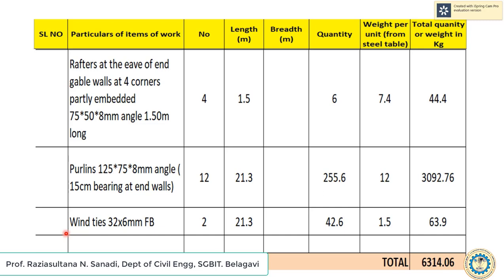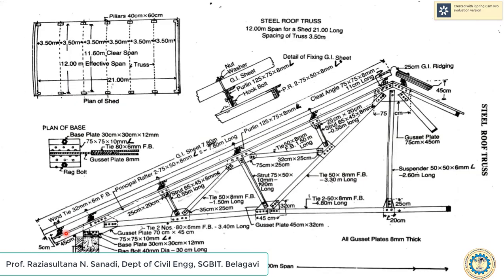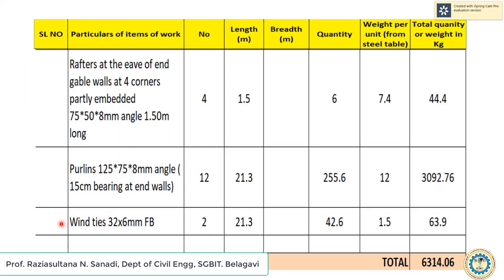Next are wind ties, 32 x 6 mm flat, also running transverse to the principal truss direction. There is 1 wind tie at each side giving 2 total. Their length is also 21.3 meters, assuming 15 cm bearing at each end. Adding this to the totals gives a cumulative total steel quantity for 5 trusses of 6314.06 kg.